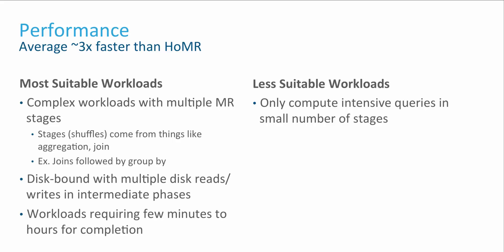On an average, Hive on Spark performs three times faster than Hive on MapReduce. There are certain workloads which are more suitable for Hive on Spark. These are typically complex workloads with multiple map-reduce stages — queries having aggregations, joins, followed by group-bys are typically good candidates. Queries with multiple disk reads and writes in the intermediate phases will also be highly benefited by Hive on Spark.